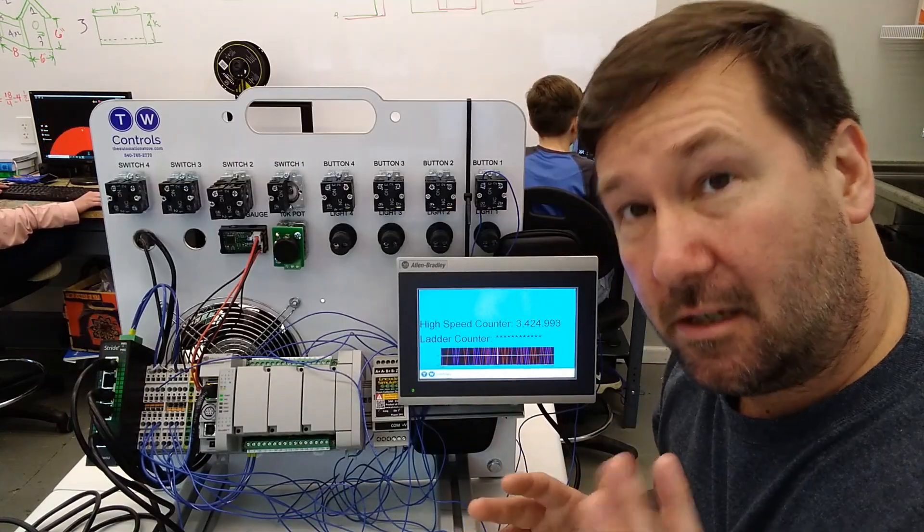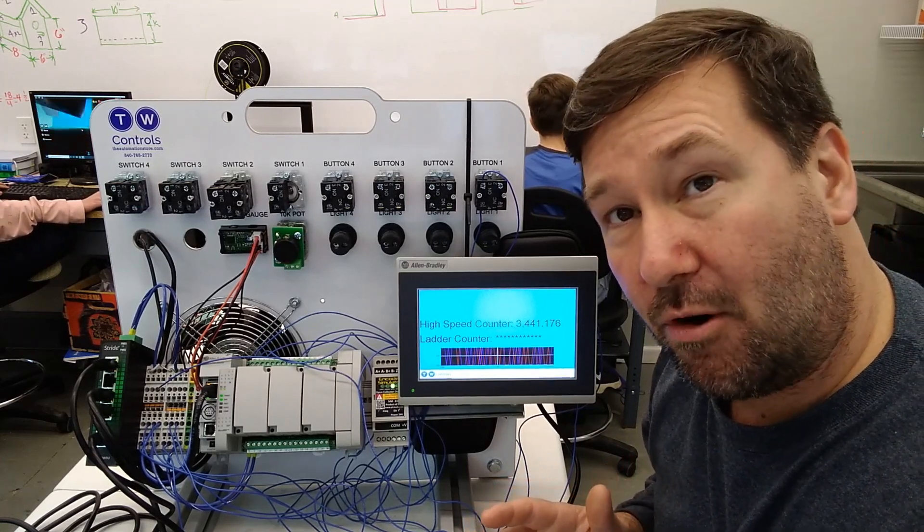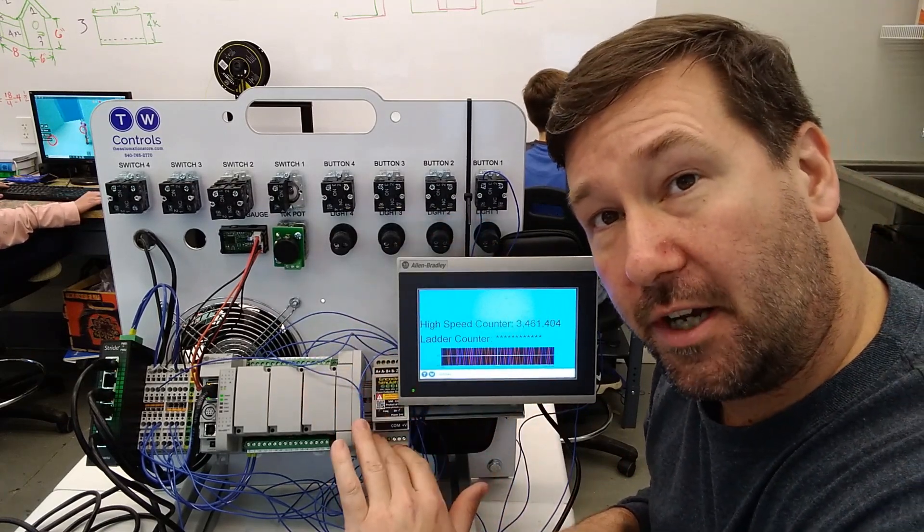So at this point, that should be clear as mud. So now we are actually going to write a program in our ladder diagram to keep track of our encoder simulator.